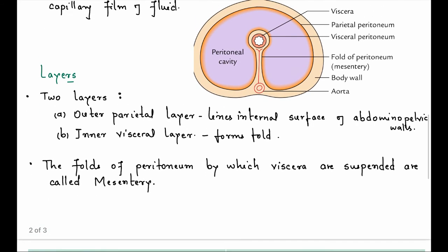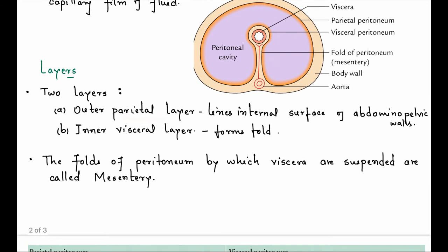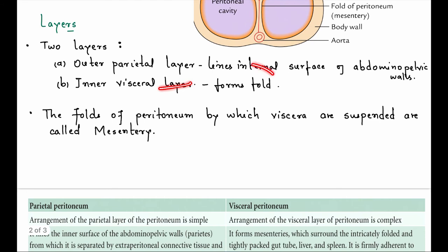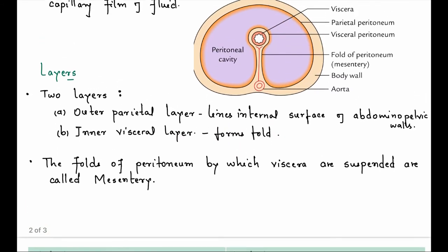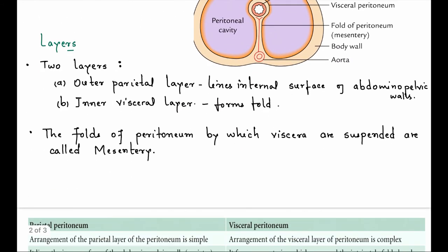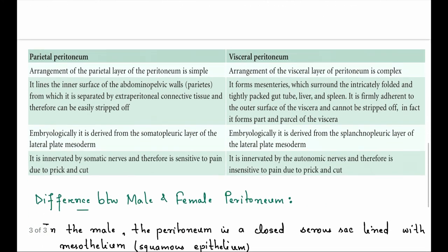Two layers: parietal and visceral. Parietal lines the internal surface of abdominopelvic walls, and visceral layer folds over organs.